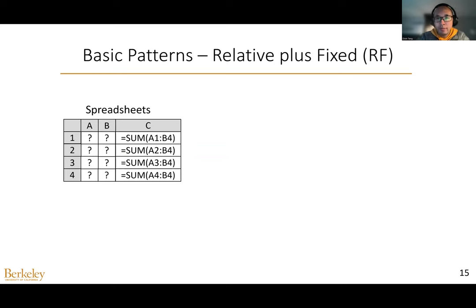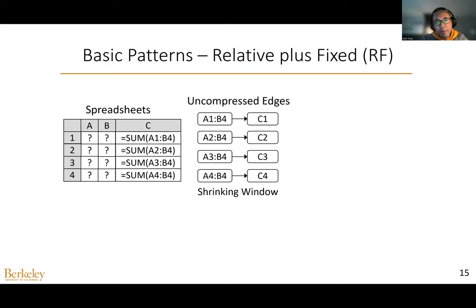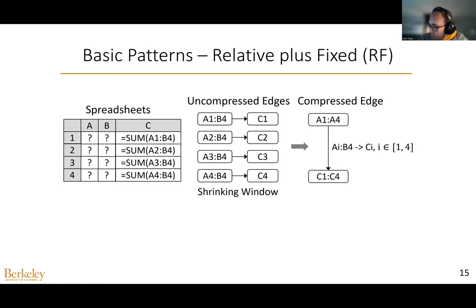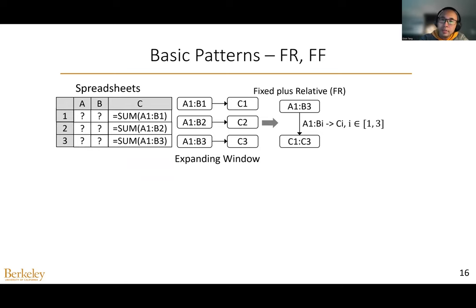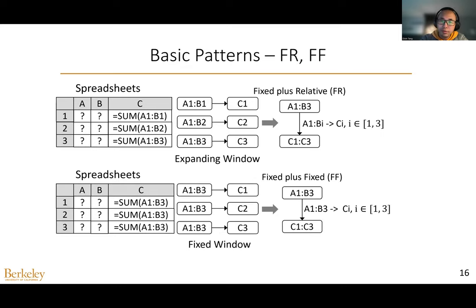The second pattern is called relative plus fixed, or RF, which means each formula cell has the same relative position with respect to the head cell and references a fixed tail cell. For this example, C1 references A1 before, C2 references A2 before, and so on — like shrinking windows. So we can represent these dependencies as Ci depending on Ai before, where i varies from 1 to 4. We also have a pattern called fixed plus relative, or FR, where each formula has a fixed head cell and the same relative position with respect to the tail cell — like expanding windows. Finally, the last pattern is called fixed plus fixed, or FF, where each formula cell references the same range.